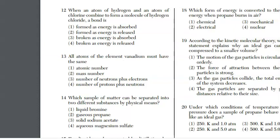Question 12, when an atom of hydrogen and an atom of chlorine combine and form a molecule of hydrogen chloride, a bond is formed. Anytime bonds are formed, energy is released. It is a fact, so the answer is choice two. For 13, all atoms of the element vanadium must have the same number of protons, and that would be the atomic number.